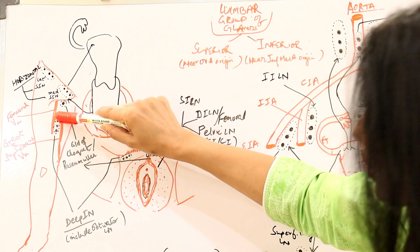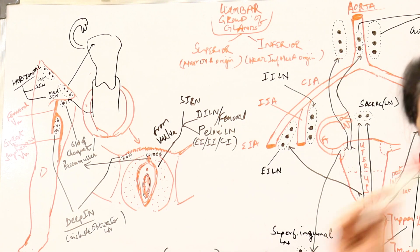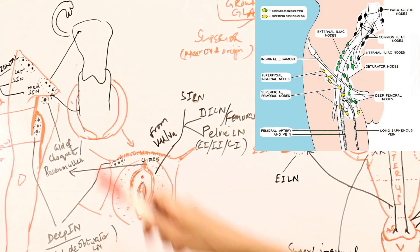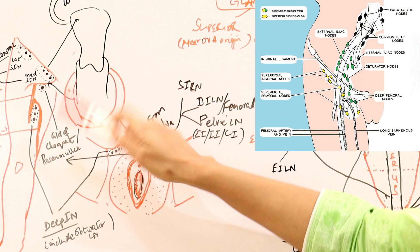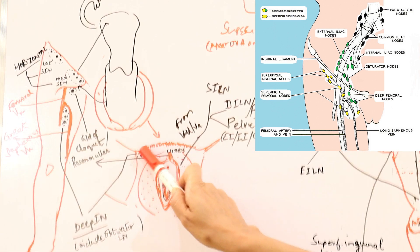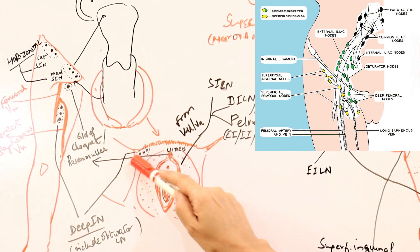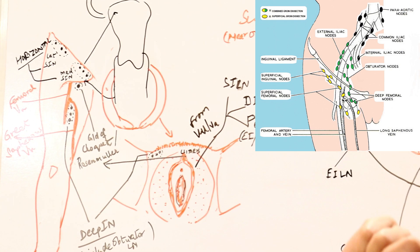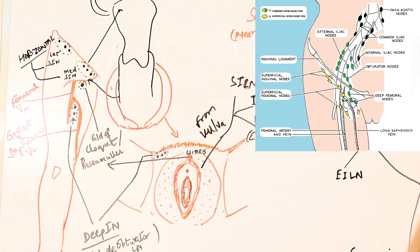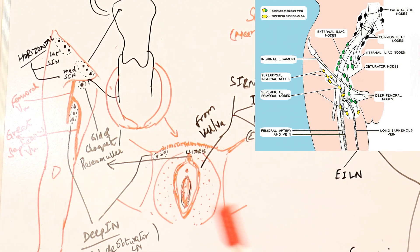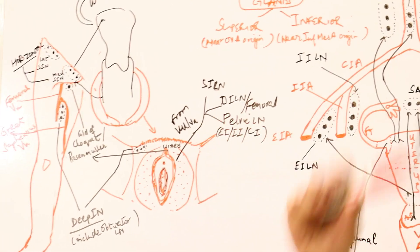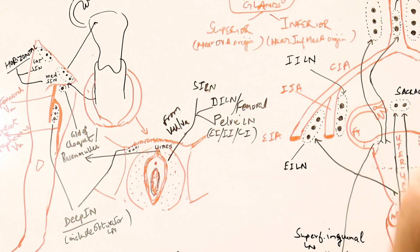The deep inguinal lymph nodes are in the inguinal canal. They course along the round ligament and in the tissues of mons veneris — mons pubis and mons veneris are the same. Lymphatics run with ligaments, which is how they receive drainage from the round ligament and from other structures including mons veneris.